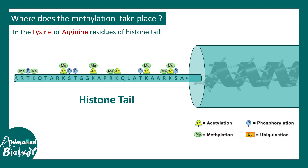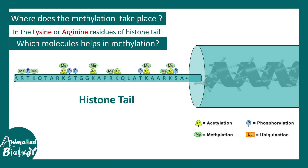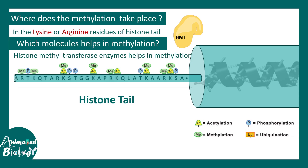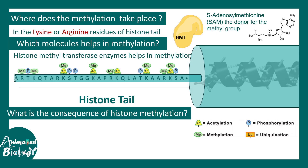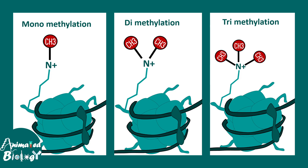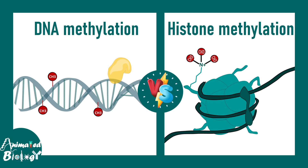Generally, lysine and arginine are the sites for histone methylation. The molecules that help in histone methylation are HMTs, or histone methyltransferases. The consequence of histone methylation is context specific — there could be transcriptional activation or transcriptional repression. Histone methylation could be monomethylation, dimethylation, or trimethylation, and each has its own consequences in terms of gene expression.